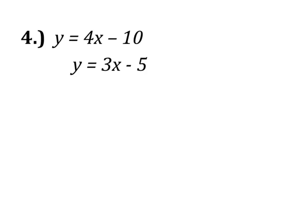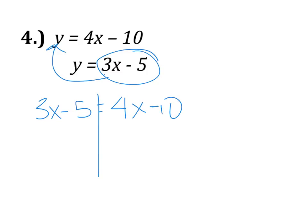This next example is something that you might be used to seeing last year. Sometimes it's called the equal values method, but basically what we're going to do is because they're both equal to Y, we're going to set them equal to each other. So I'm going to take 3X minus 5 equal to 4X minus 10.